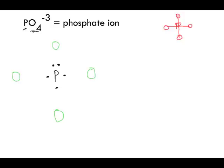Oxygen is in group 16, so it will have six valence electrons: one, two, three, four, five, six. We do the same for each of the four oxygens — each gets six valence electrons drawn around it. Notice I've drawn some electrons in a certain arrangement, leaving bonding sites open, as you'll see when we start drawing the actual bonds.